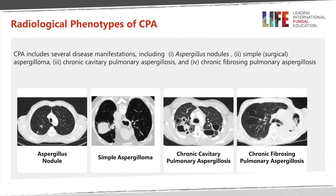This is a summary of the radiological appearances of CPA. There are different types of appearance ranging in severity. On the right, we can see an aspergillus nodule — exactly what one might expect, a nodular appearance. From histology and biopsy evidence, this nodular appearance can be caused by aspergillus, but it can also be caused by other fungal infections or non-infective problems such as malignancy.